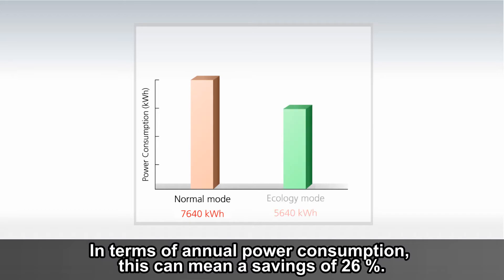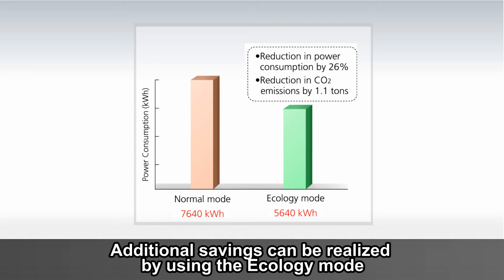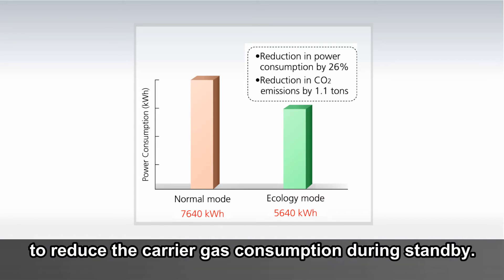In terms of annual power consumption, this can mean a savings of 26%. Additional savings can be realized by using the Ecology Mode to reduce the carrier gas consumption during standby.